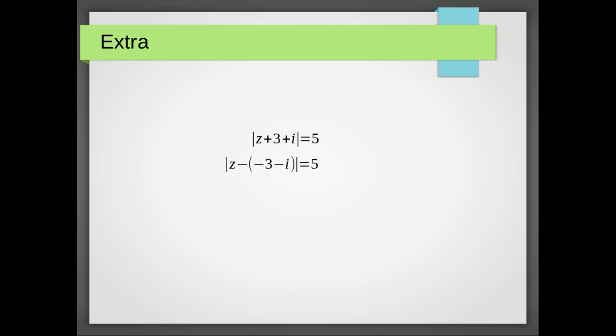So this becomes Z minus and then it's minus three because minus minus is a plus and then minus I, a bit simpler because minus minus is a plus again. So Z is the point which is five away from the point minus three minus I.